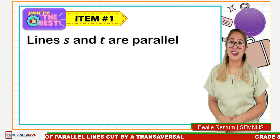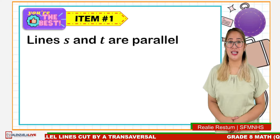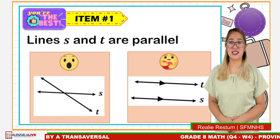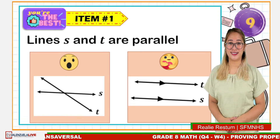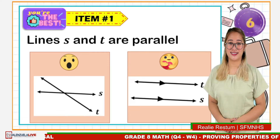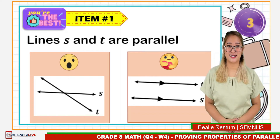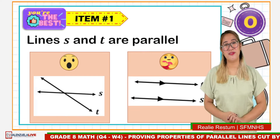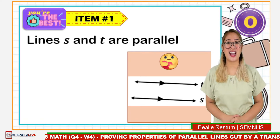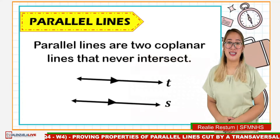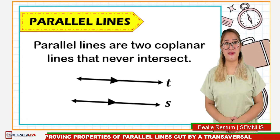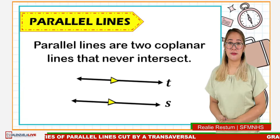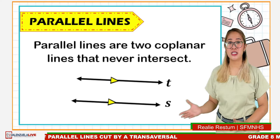Number 1: Line S and line T are parallel. Is it the wow or care reaction? Time is up! The correct answer is the care reaction. Good job! Parallel lines are two co-planar lines that never intersect. These markings signify that the two lines are parallel.